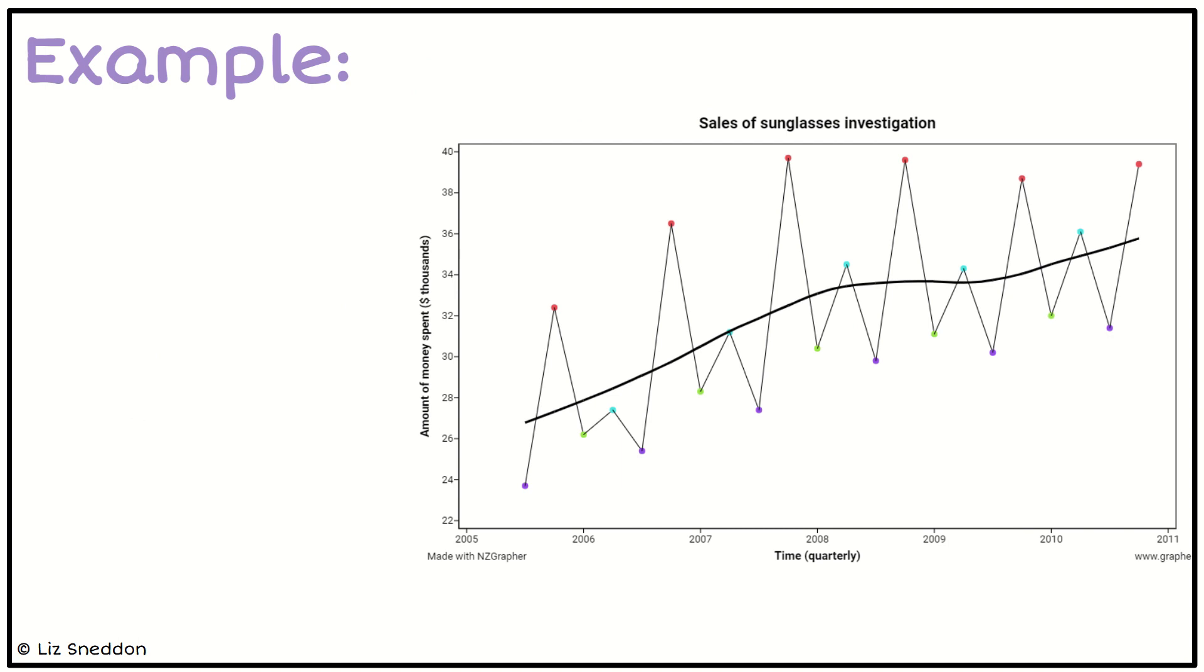So here is the data from NZGrapher, and the first thing we want to do is identify what does each color represent. So in NZGrapher, if you hover over it with your mouse, it'll tell you which quarter it is. So if I've done that, it started off in quarter three of 2005. So the purple represents quarter three.